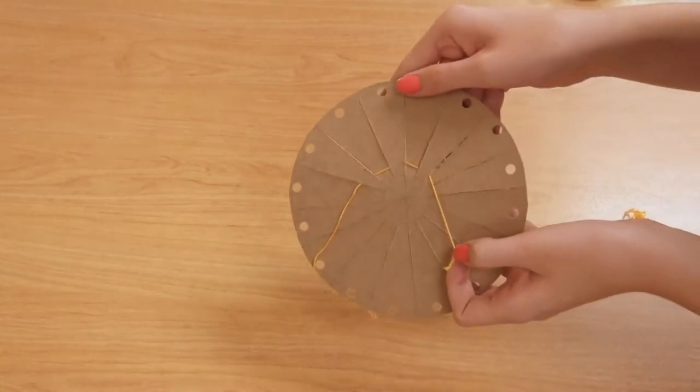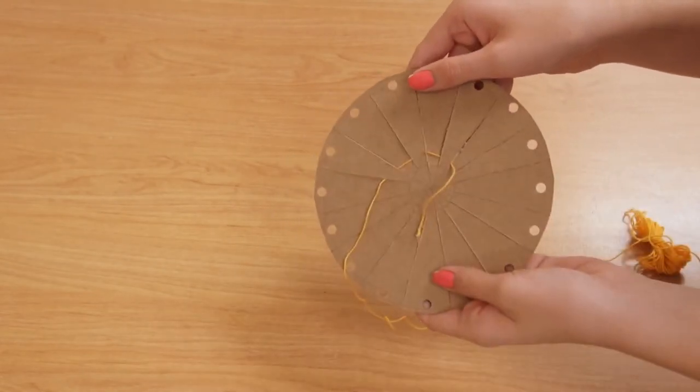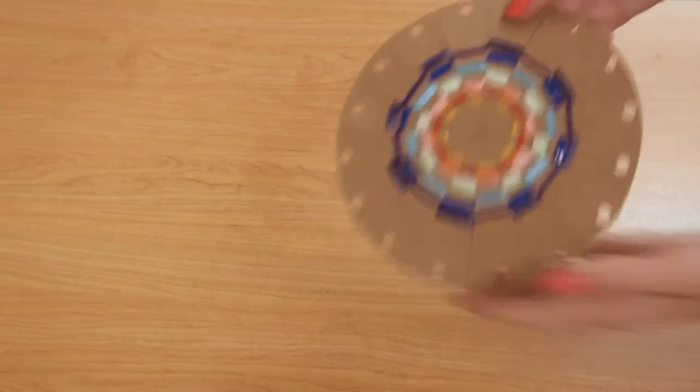For each color, alternate which portions you cover with the string. And this is what it should look like when you're done weaving.